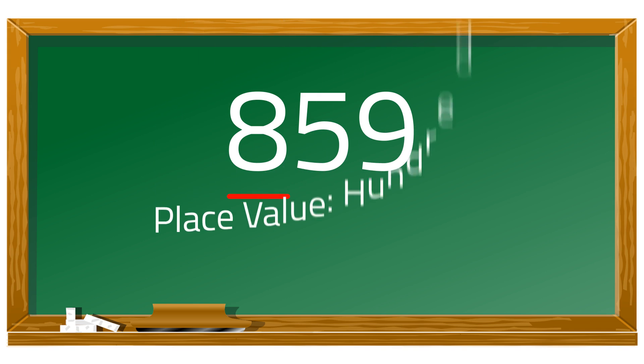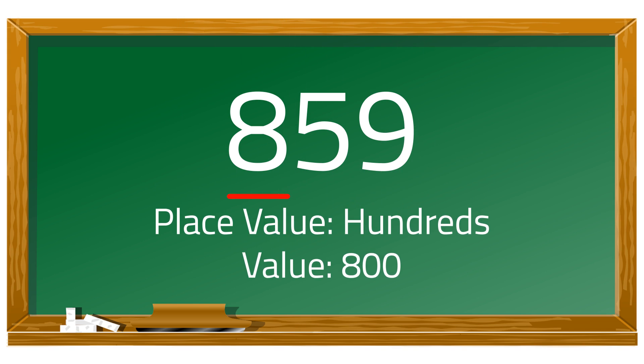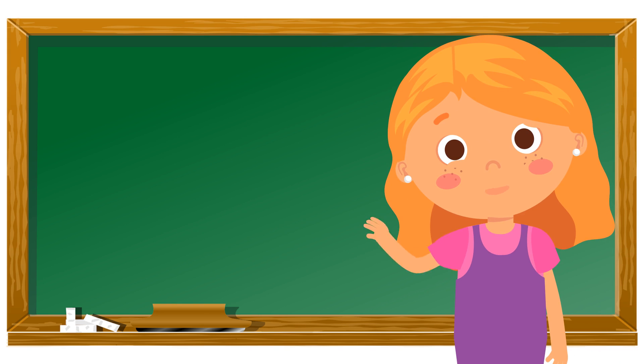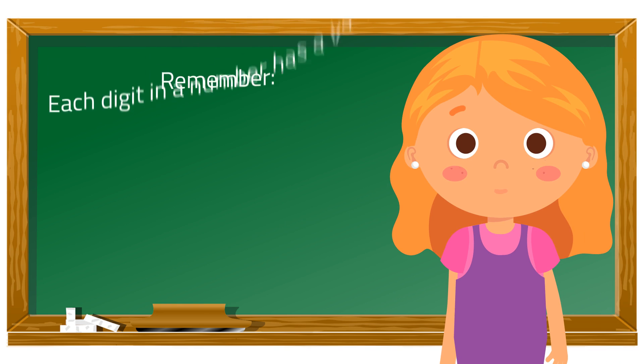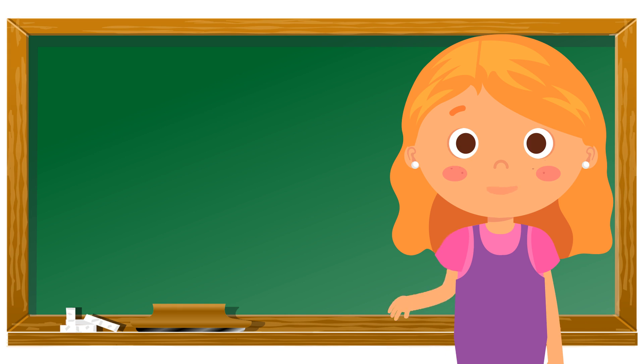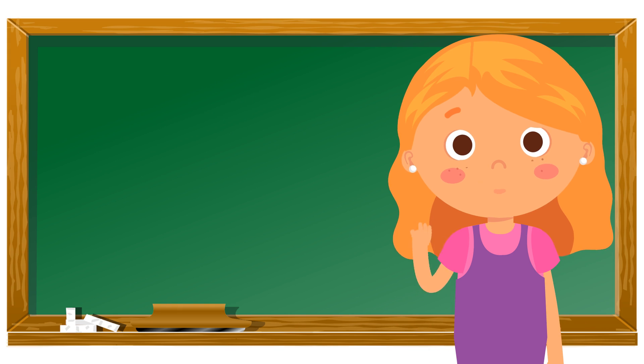Great job! The place value of 8 is hundreds and its value is 800. That's it for a quick discussion on identifying place value. Always remember that each digit in a number has a value. The value of a digit depends on its place value. Thank you for joining me today. See you on our next episode!